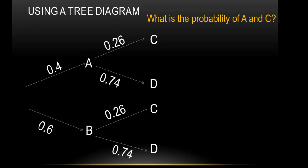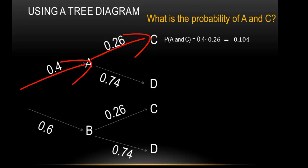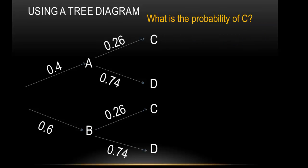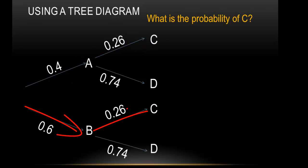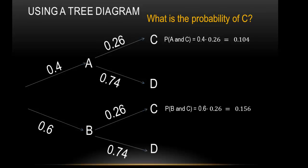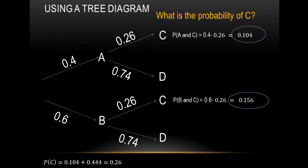So if I had the question — what is the probability of A and C — what we would do is multiply through the branches of A and C. When we multiply 0.4 times 0.26, we get 0.104. That is the probability of A and C. Now what if I wanted to know the probability of just C? You can go up A then C, or you can go down B then up C — two ways of getting to C. Multiplying A to C gives 0.104; multiplying B then C gives 0.6 times 0.26, which is 0.156. Adding those two probabilities together gives 0.26.